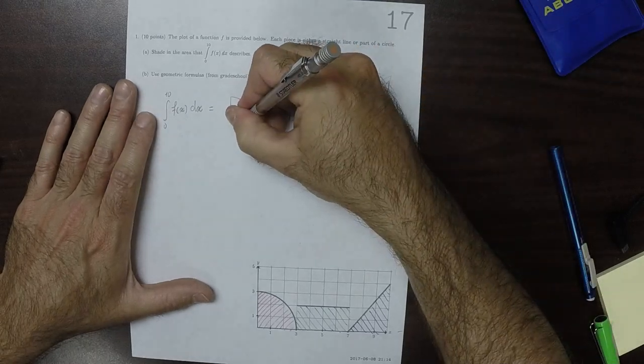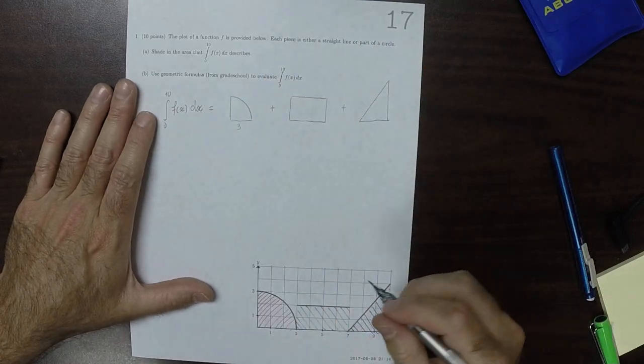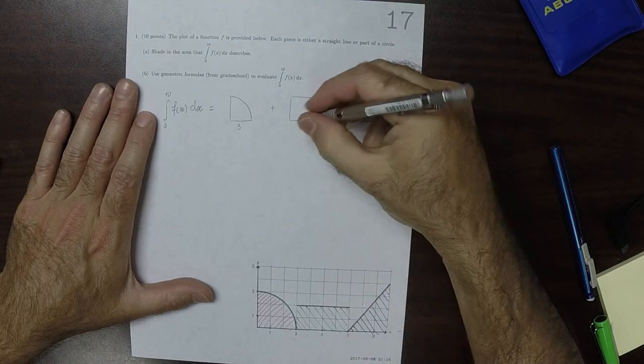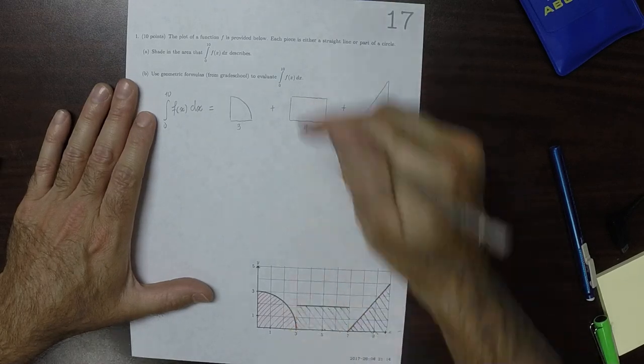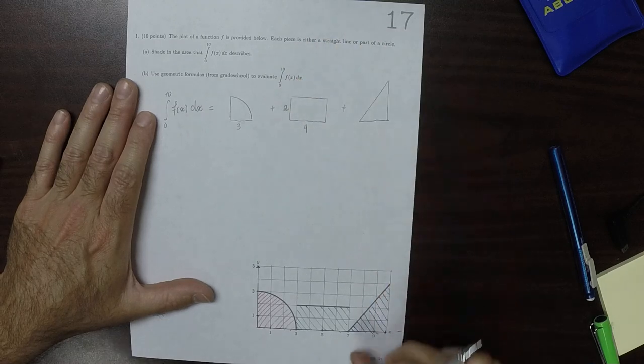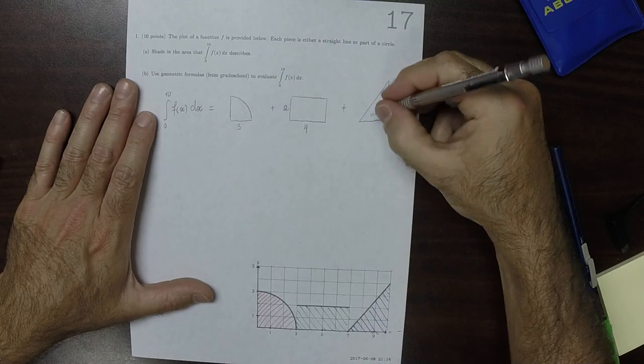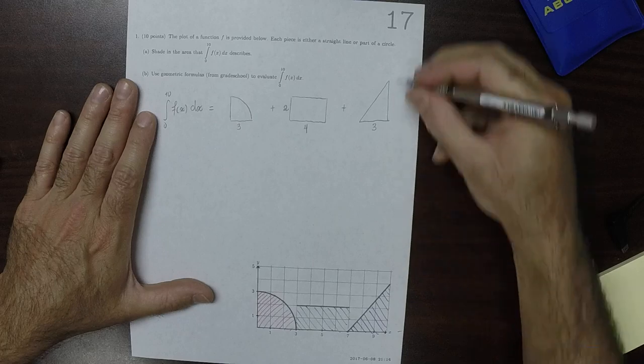This is 3, so that's radius 3. That is 4, and this is 2, and this is 3, and that height is 4.